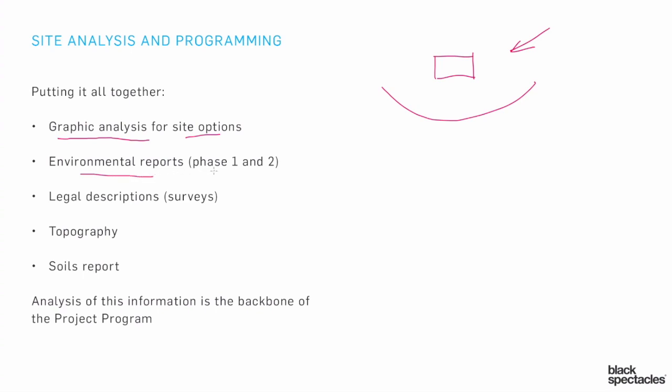There are other issues we want to feed into this discussion, and one of them is the environmental reports. We've talked about those in other sessions — specifically a Phase 1 and a Phase 2. The Phase 1 is that general description where you send a specialist who walks the site, does a little research, and makes recommendations. They check it out but don't do testing. The idea is to determine whether there seems to be an environmental problem. If there's no history of problems and everything looks good, then you don't need a Phase 2.